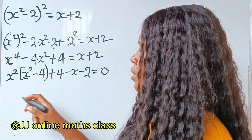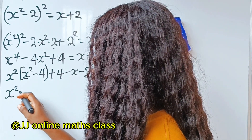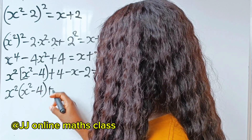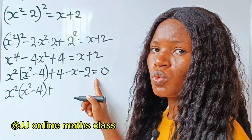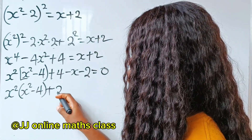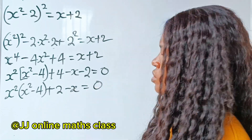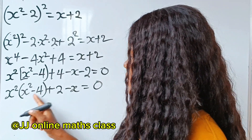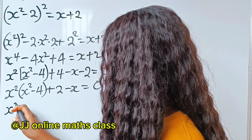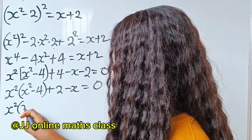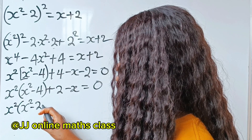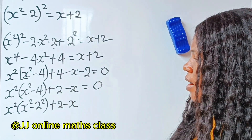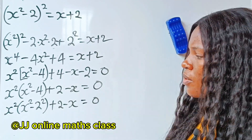Is equal to 0. So we have x to the power of 2 times brackets x squared minus 4, plus 4 minus 2 gives us 2, so plus 2 minus x is equal to 0. Now, we can write this as x squared, brackets x squared minus 2 squared, plus 2 minus x, and this is equal to 0.